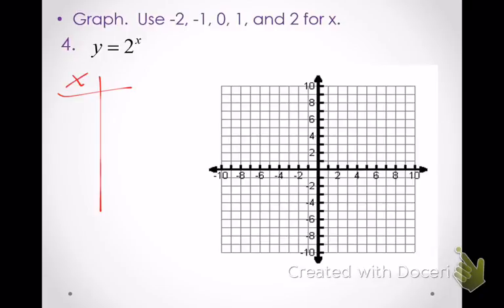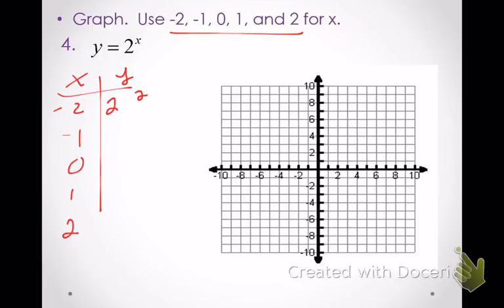We create a bunch of inputs — negative 2, negative 1, 0, 1, and 2 — because those are the easiest numbers to plug in. For each input, we figure out the matching output by literally putting those values into the function. So 2 to the negative 2 power: negative exponents mean we drop the base down into the denominator, leaving a 1 in the numerator. 2 squared is 4, so when we put negative 2 into this function, 1/4 comes out. One of our points on the graph is (−2, 1/4).